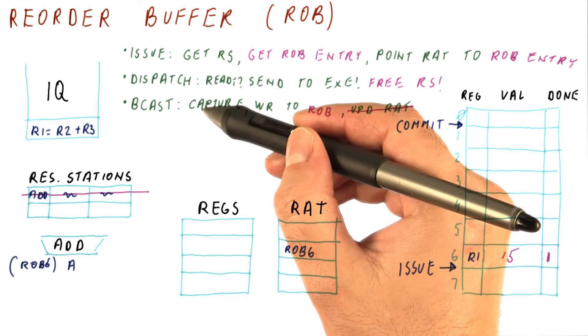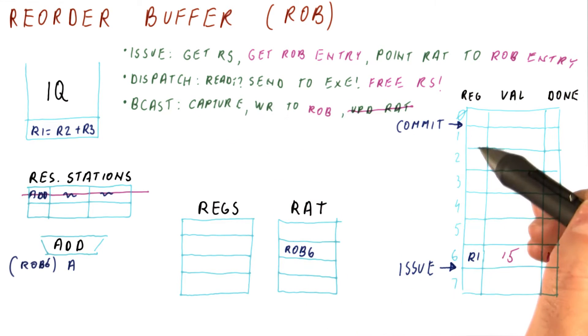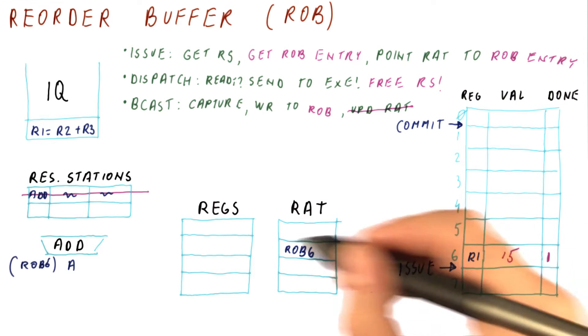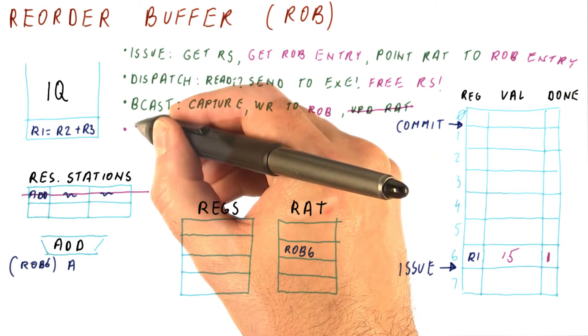So we don't do this here. After broadcasting its result, the instruction would be completed in Tomasulo's algorithm. With the ROB, we are still not done with it. Yes, we have computed the result and marked the computation as done, but we have not deposited this result in the registers. For that, there is an additional step called commit.